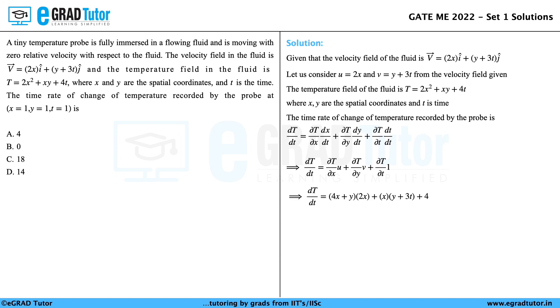dT/dt equals (4x plus y) times 2x plus x times (y plus 3t) plus 4. Simplifying that, we get dT/dt equals 8x squared plus 3xy plus 3tx plus 4.